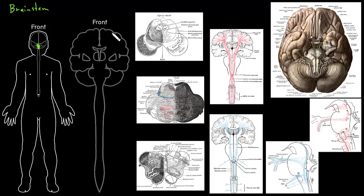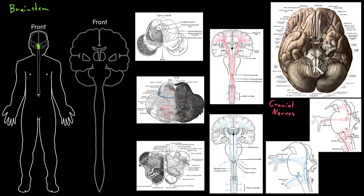The brain stem connects the cerebrum on top, and it connects the spinal cord below, and it connects the cerebellum, which is behind the brain stem. The brain stem also connects most of the cranial nerves. Here's a different image of the brain looking at it from below — here's the cerebrum, here's the cerebellum, and here's the brain stem. All these little stringy things coming out are the cranial nerves, and most of them are coming out of the brain stem.